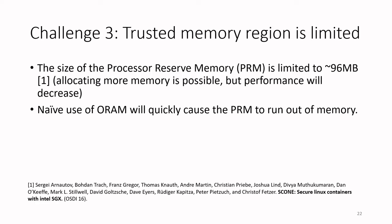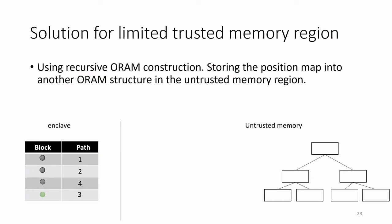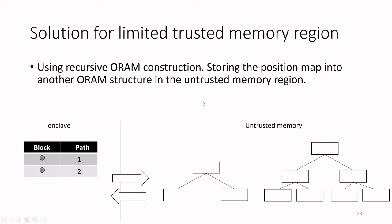The third technical challenge is the limitation of Intel SGX on the size of the protected memory region. The processor reserved memory is limited to around 96 megabytes, meaning the position map and stash cannot exceed this size — and the naive use of ORAM will quickly cause this memory to run out. While allocating more memory is possible, performance decreases significantly. The solution from the ORAM literature is to use recursive ORAM construction: we reduce the size of the position map by storing it into another ORAM structure in the untrusted memory region, repeating this recursively until the position map fits within enclave memory.